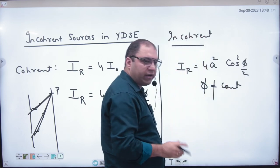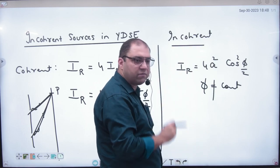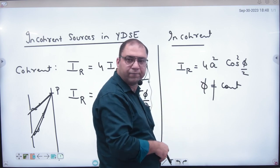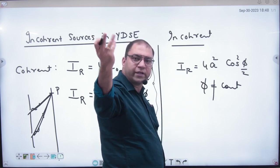For any point, φ is constant in coherent. It is constant in two ways. If there is point P, path difference is constant. It will remain constant. Then the phase difference is constant. It will not remain in this way for incoherent. In this way, φ is variable. When it is variable...